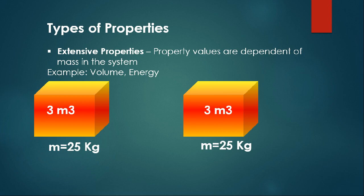If we cut the cube further into three pieces of 10 kg, 10 kg, and 5 kg, each piece will have a different volume. This shows that volume is dependent upon the mass of the system — it is an extensive property.